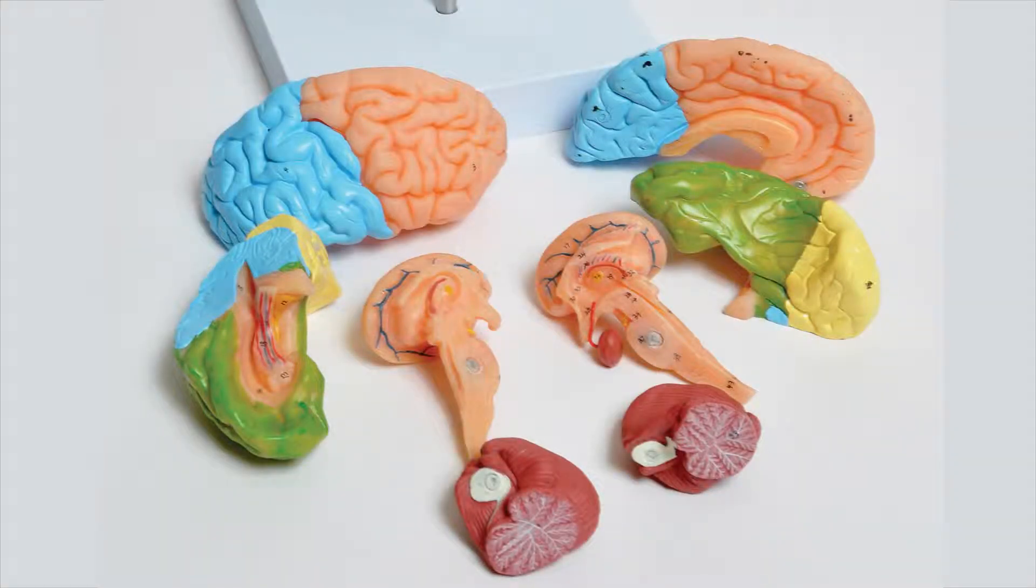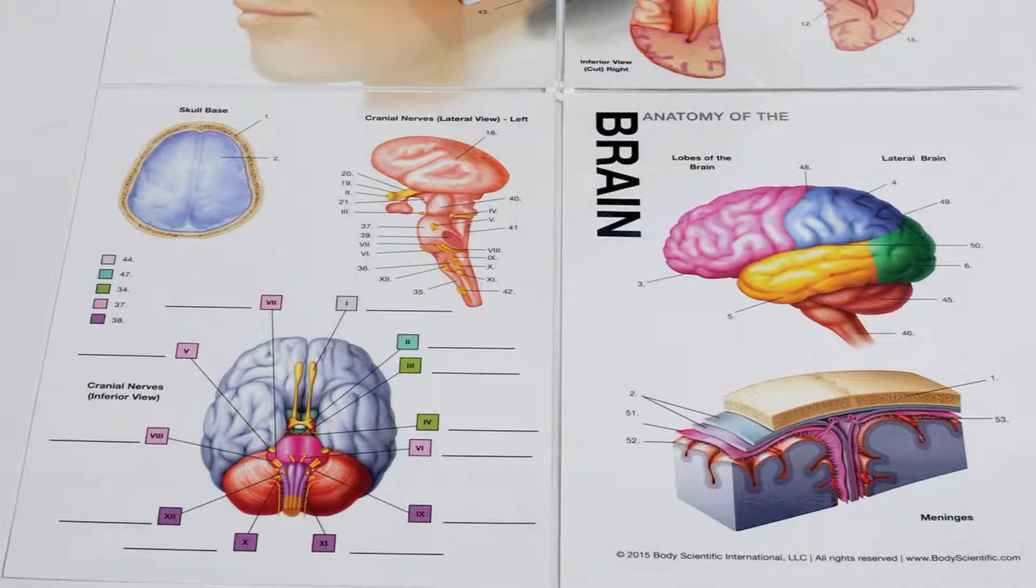There are over 50 different labeled structures. These 50 different structures are all indicated on a colorful laminated guide.